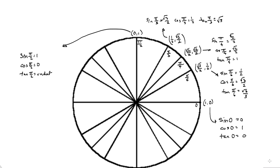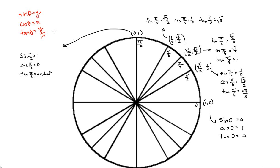We've determined how to find the sine, cosine, and tangent of all our standard unit circle angles. The sine of an angle is the y-coordinate, the cosine of an angle is the x-coordinate, and the tangent of the angle is the y-coordinate over the x-coordinate on the unit circle.